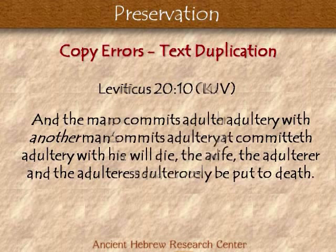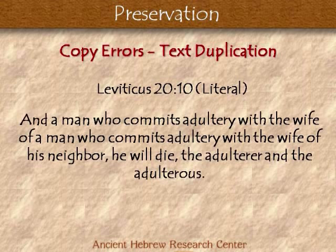But if you look at it in the Hebrew, this is a literal rendering of the Hebrew: 'And the man who commits adultery with a wife of a man who commits adultery with a wife of his neighbor, he will die, the adulterer and the adulteress.' Did you notice anything in there? See anything that looks kind of strange?